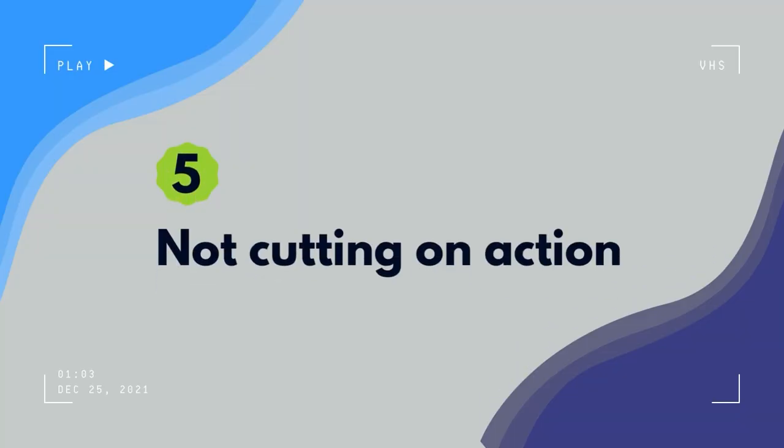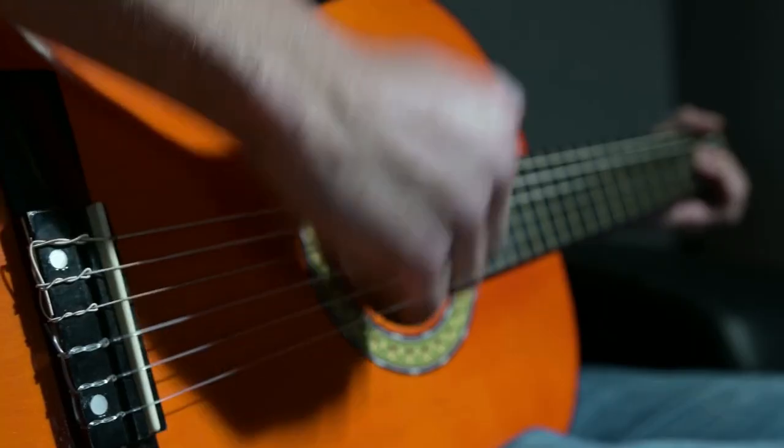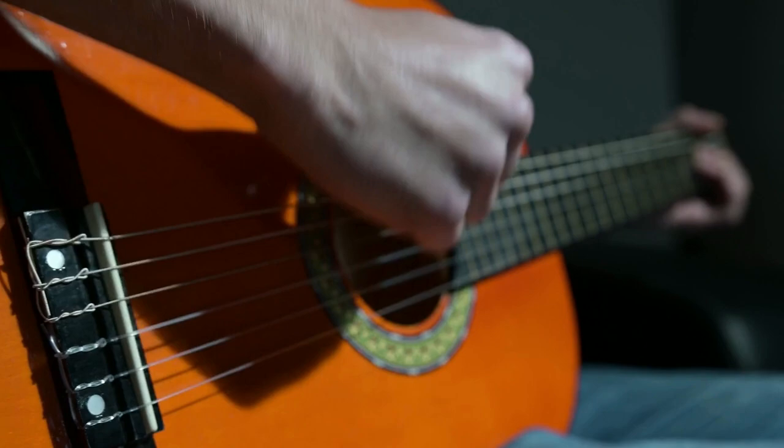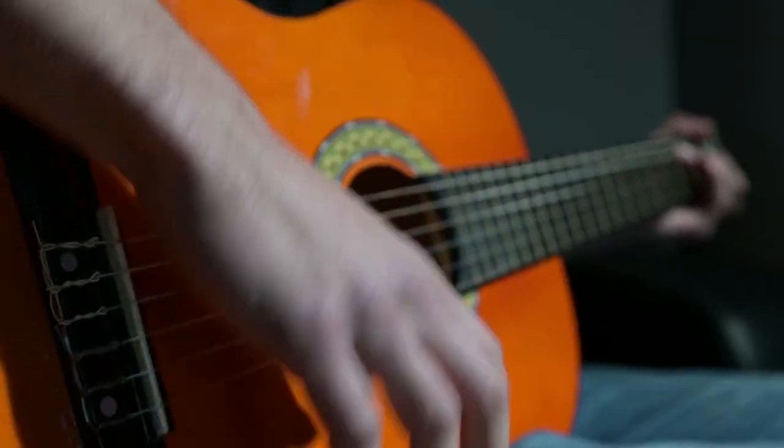The fifth mistake is not cutting on action — this is a big one. Cutting on action is a small thing that makes a really big difference. Say you filmed someone playing guitar from two angles: find an action like a strum and cut the first video right in the middle of that strum where you see the most motion blur, then have the second angle pick up right in the middle of the same action. As you can see, cutting on action feels like a much more natural edit. You can even do this with talking head videos by cutting on the action of someone's hands.